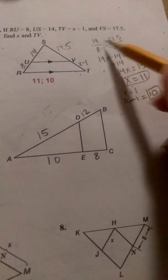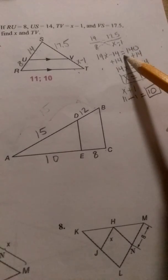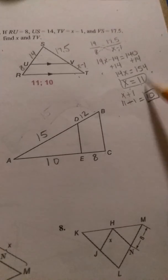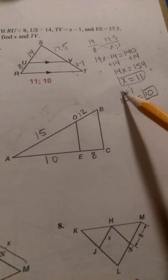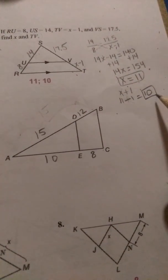We cross multiply, don't forget to distribute here, that gives you 14X minus 14 is equal to 140. When you solve for X you get 11, but then we also want to find what VT is. So we put 11 in for X here, and we subtract 1 to get 10 for VT.